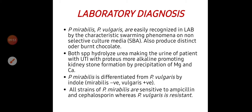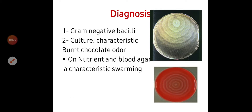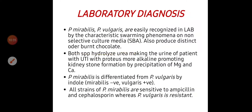Regarding laboratory diagnosis, Proteus mirabilis and vulgaris are easily recognized by the characteristic swarming phenomena. Both species will hydrolyze urea, making the urine of the patient more alkaline, so acidification is needed to prevent stone formation. Indole can differentiate between vulgaris and mirabilis — vulgaris is indole positive while mirabilis is indole negative. All strains of mirabilis are sensitive to ampicillin and cephalosporin, while vulgaris is more resistant, making it more severe and dangerous.